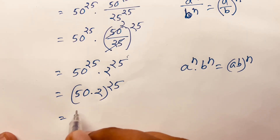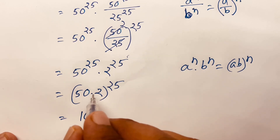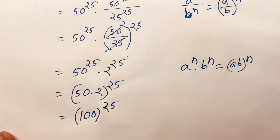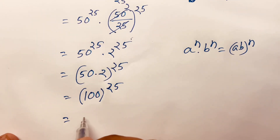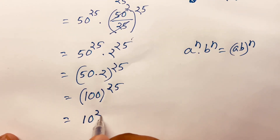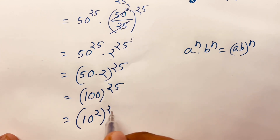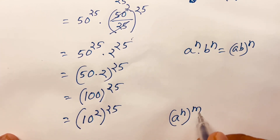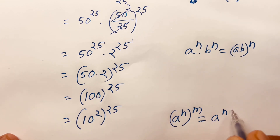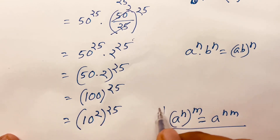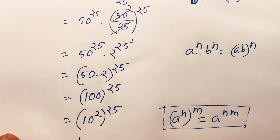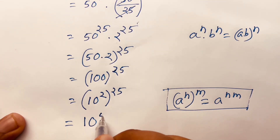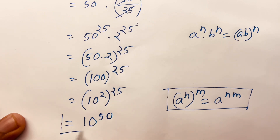Then 100 equals 10 to the power 2, so this becomes (10 to the power 2) to the power 25. We know that (a to the power n) to the power m equals a to the power (n times m). So 10 to the power (2 times 25) equals 10 to the power 50. This is our final answer. Thank you.